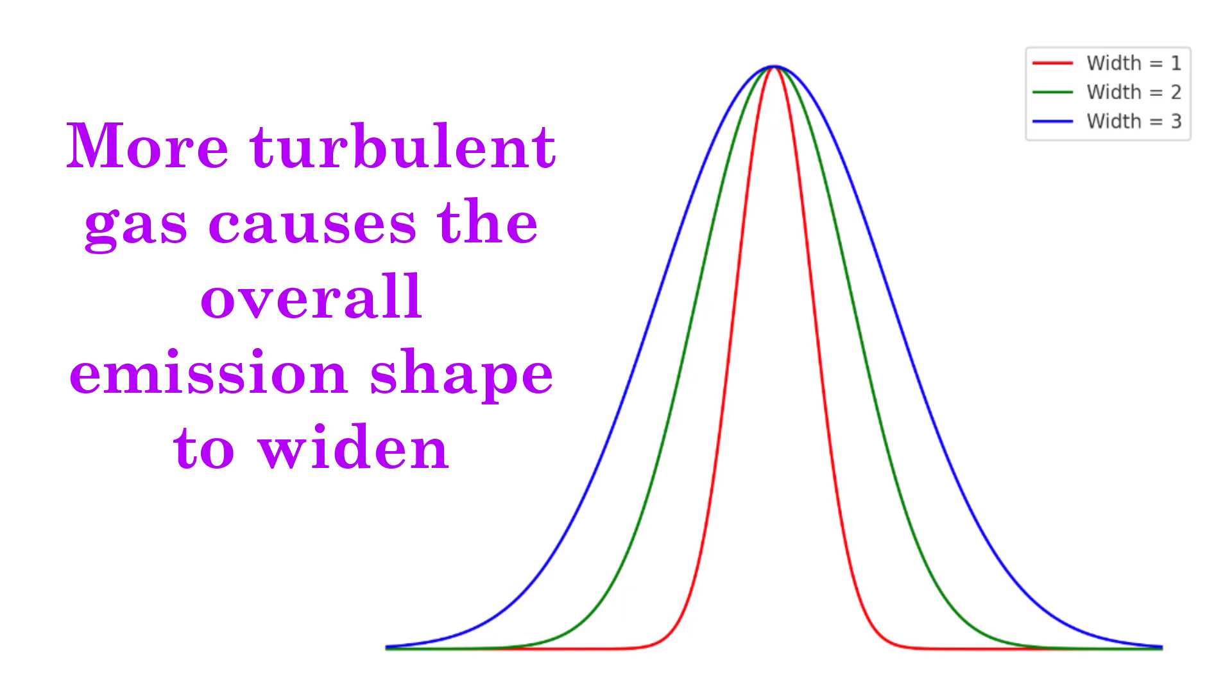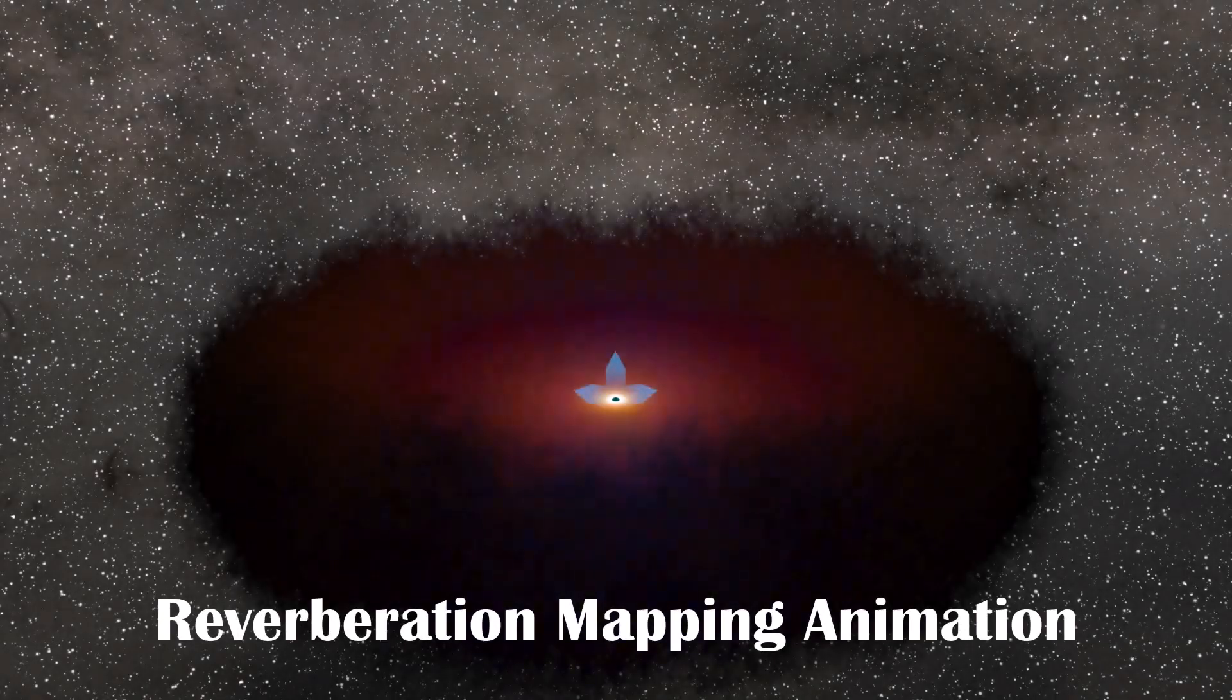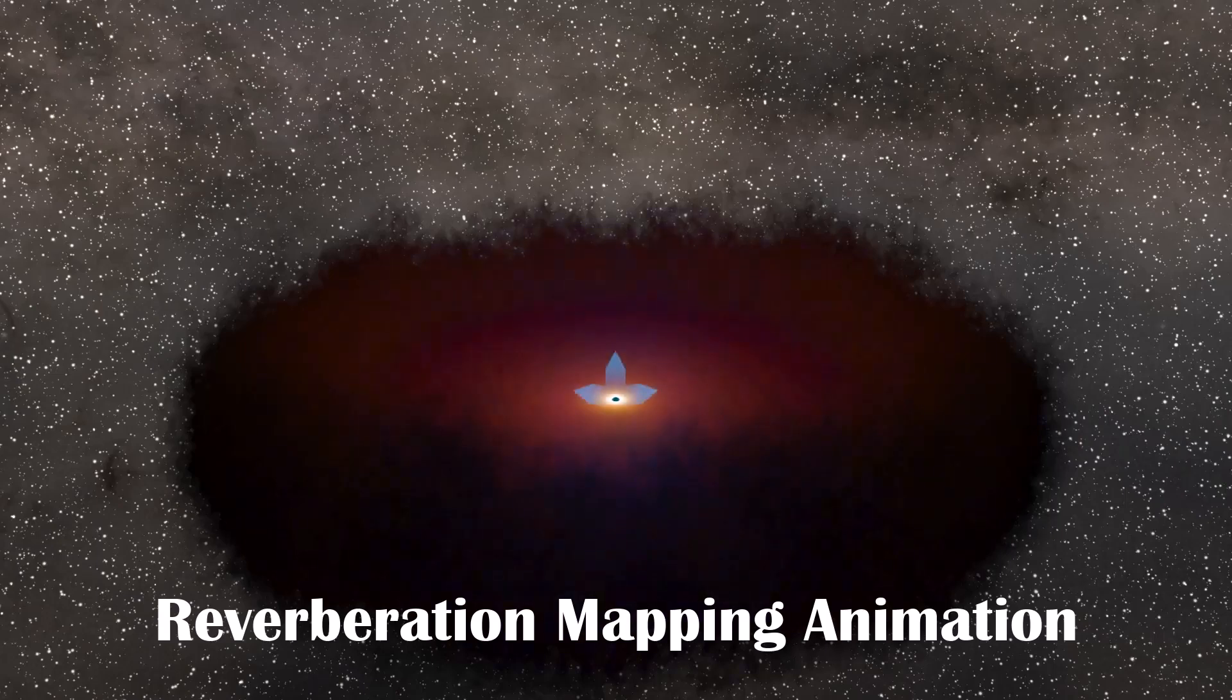Put simply, the broadening is due to the gas being close to the AGN. The light from the AGN gets absorbed and then re-emitted by the gas in the broad line region, and crucially it's this mechanism we can use to deduce the mass of the central black hole.